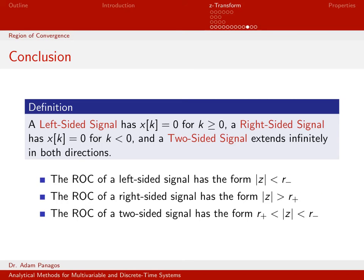Taking both inequalities together — needing both S minus and S plus to converge — for two-sided signals the region of convergence must satisfy both: the magnitude of Z less than R minus and greater than R plus. This is what we've proven generally about how time domain properties of discrete time signals impact the region of convergence.